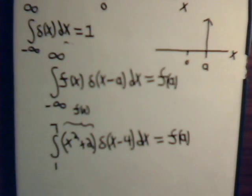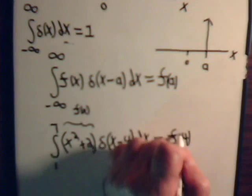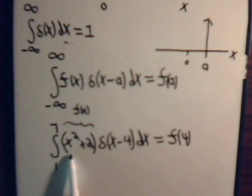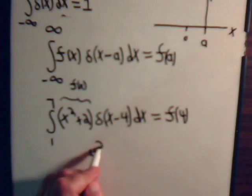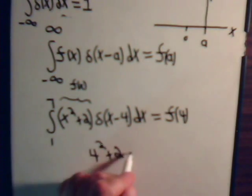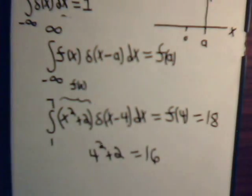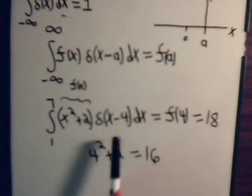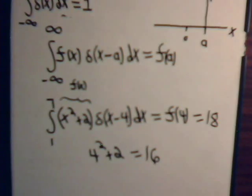And that equals f of a, meaning that a, in this case, is 4. So, x is going to be 4. So, we have 4 squared plus 2 equals 18. Again, all values of x are going to produce 0, except when x equals 4. 4 squared is 16 plus 2 is 18.